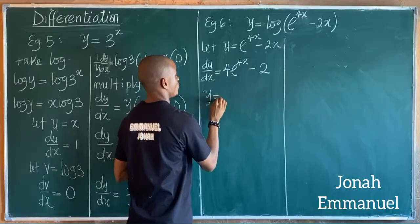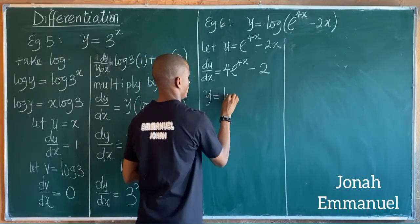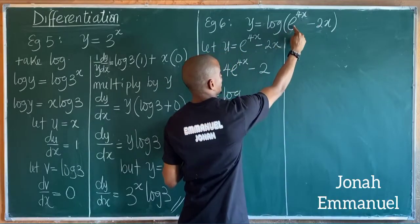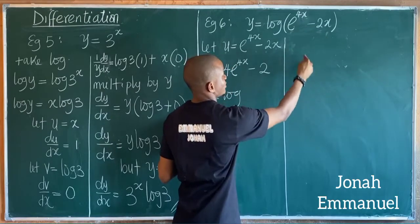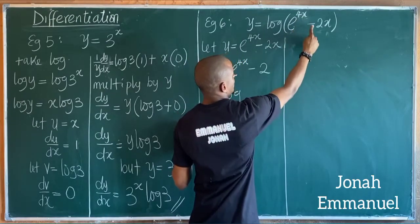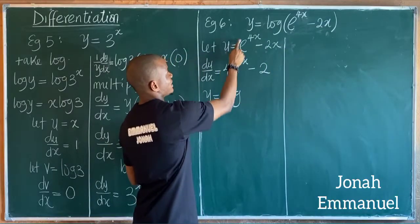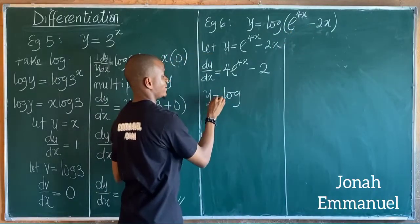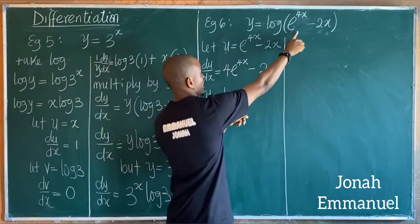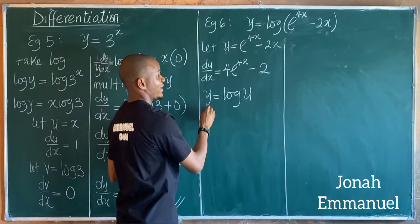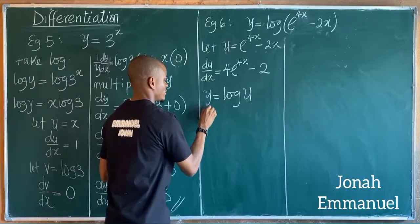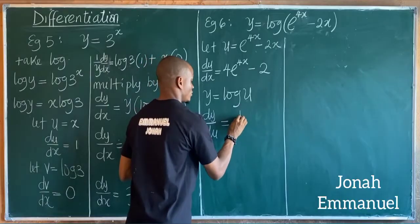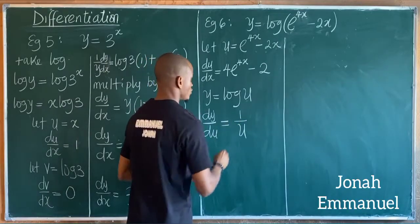Since u equals e^(4x) minus 2x, the original function becomes y equal to log u. Differentiating y with respect to u gives dy/du equal to one over u.